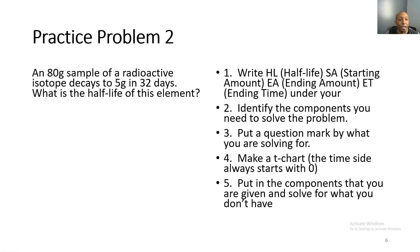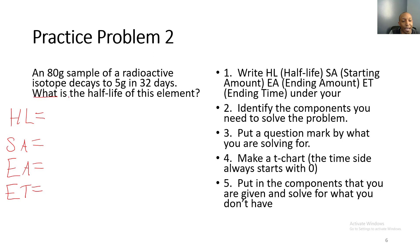Our second half-life problem: An 80-gram sample of a radioactive isotope decays to 5 grams in 32 days. What is the half-life of this element? We write our HL, SA, EA, and ET. Since we don't know the half-life, we put a question mark there. The starting amount is 80 grams, the ending amount is 5 grams, and the ending time is 32 days.